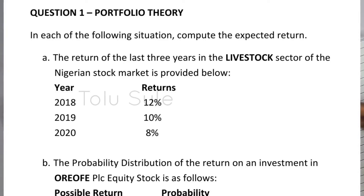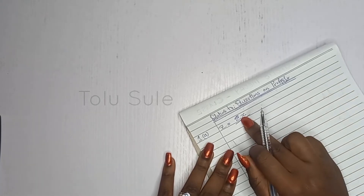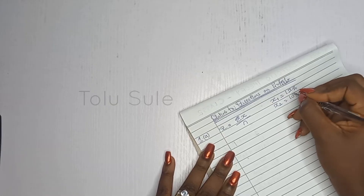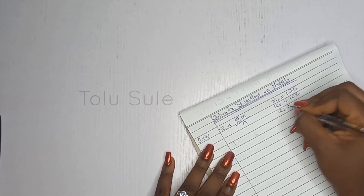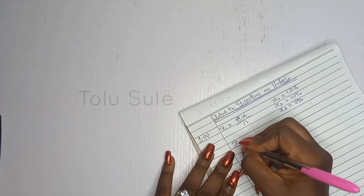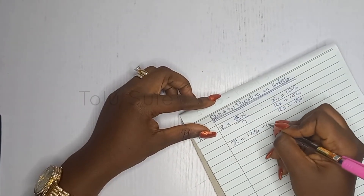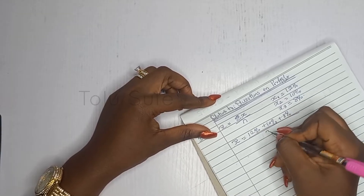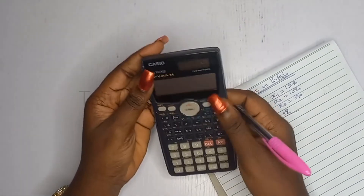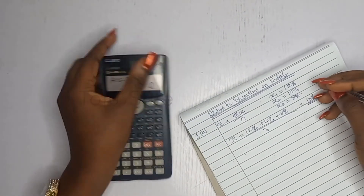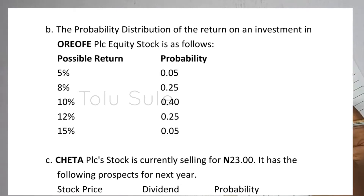They gave you the returns, so you use the simple average formula: expected return equals summation of x over n. X1 is 12%, X2 is 10%, and X3 is 8%. So the expected return equals 12% plus 10% plus 8%, divided by 3. Put that in your calculator — that's 10%. Your expected return is 10%.